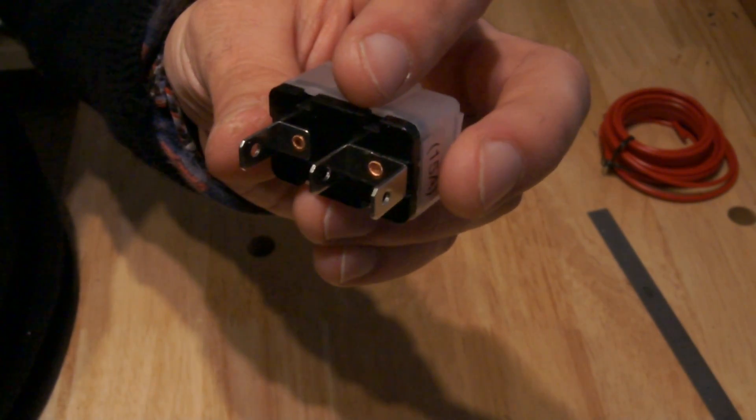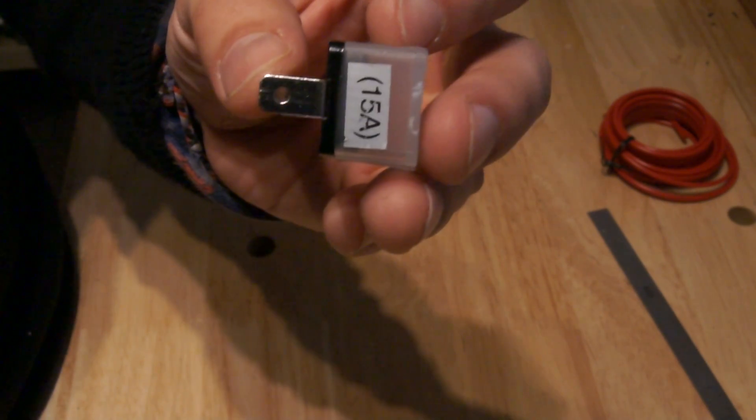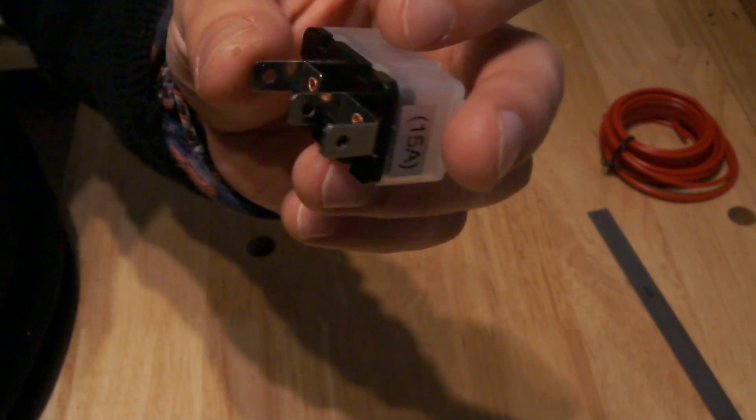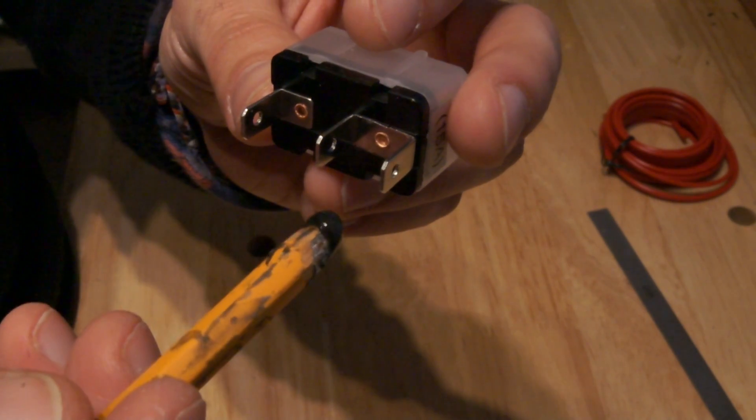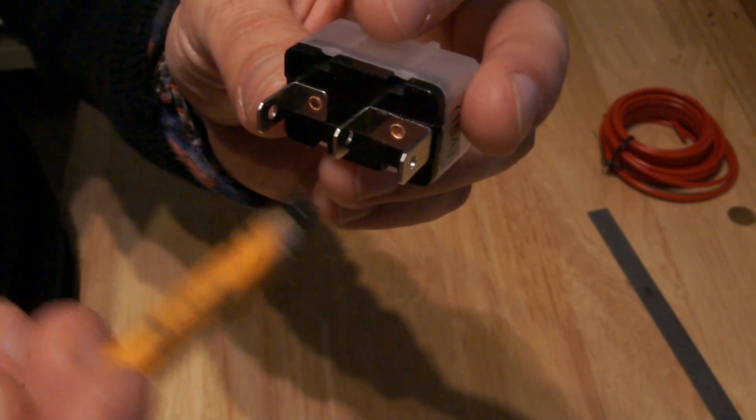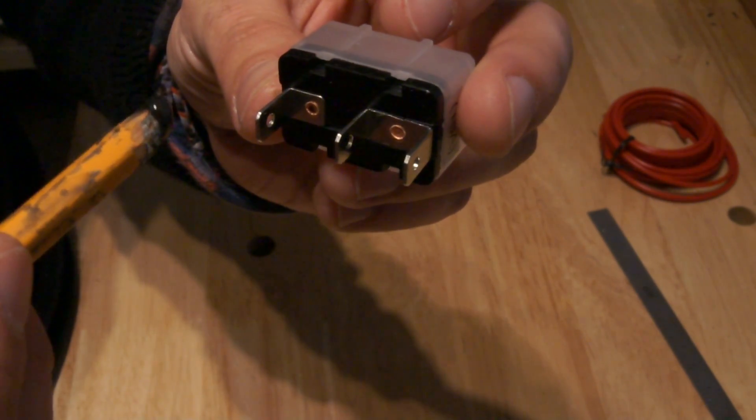So we'll take the circuit breaker and orient it so that the 15 amp sticker is on the right side. You can also see that there's two terminals that are the same terminal on the right side and there's the open single terminal on the left side.